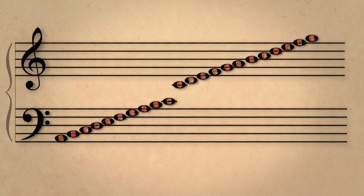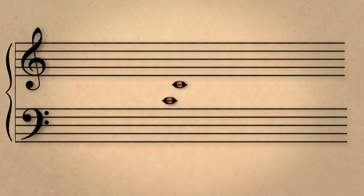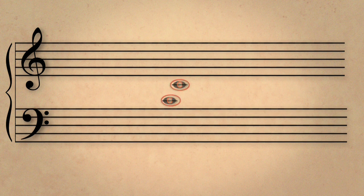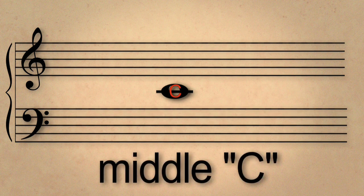Putting these two clefs together creates the grand staff, and the C that we just wrote with one ledger line above the bass clef and one ledger line below the treble clef is called middle C.